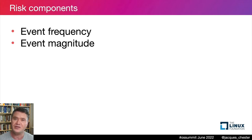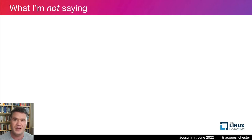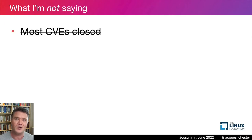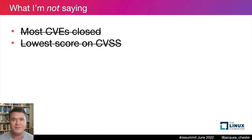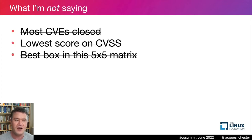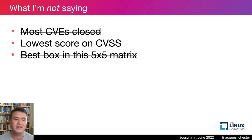Risk reduction is achieved when we reduce the frequency or the magnitude — or both — of risk realizations. Notice what I am not saying: I'm not saying most CVEs closed, or lowest CVSS score, or best box in a 5×5 matrix. I want honest probabilities and honest dollars — crisp, sharply divisible stuff we can explain to our bosses and sponsors, which is unambiguous and can be meaningfully averaged and compared.